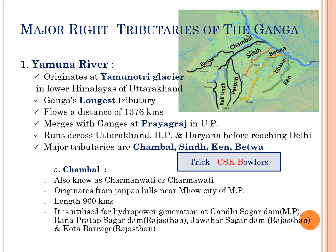Yamuna river originates at Yamunotri Glacier in the Lower Himalayas of Uttarakhand state. Yamuna river is the longest tributary of Ganga and flows for a distance of about 1,376 kilometers. It runs across Uttarakhand, Himachal Pradesh, and Haryana before reaching Delhi, and it merges with Ganga at Prayagraj in Uttar Pradesh state.